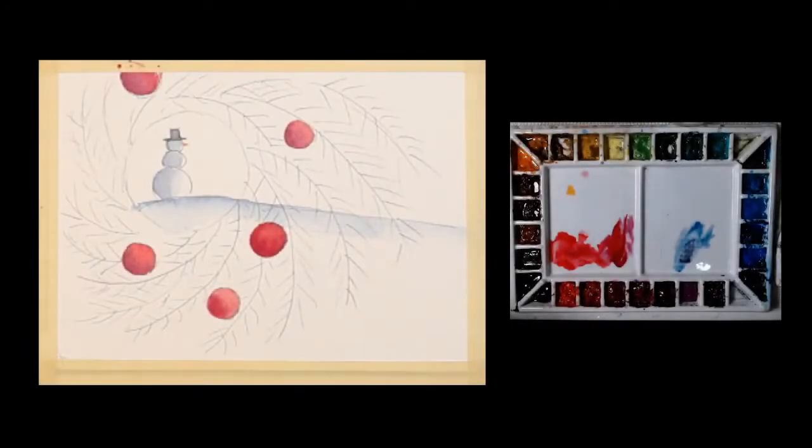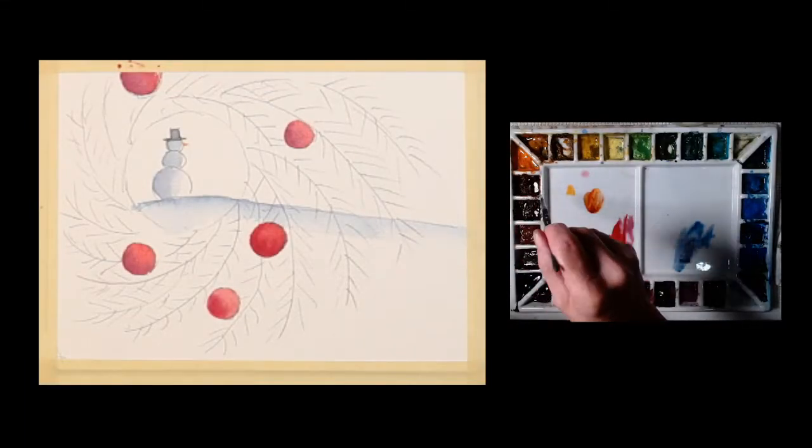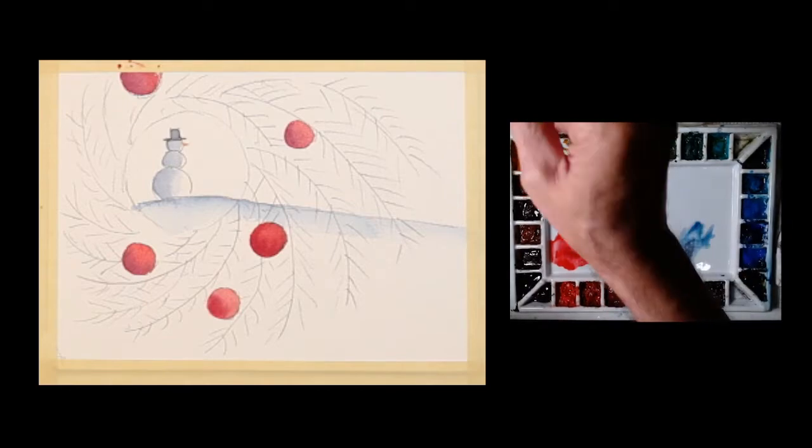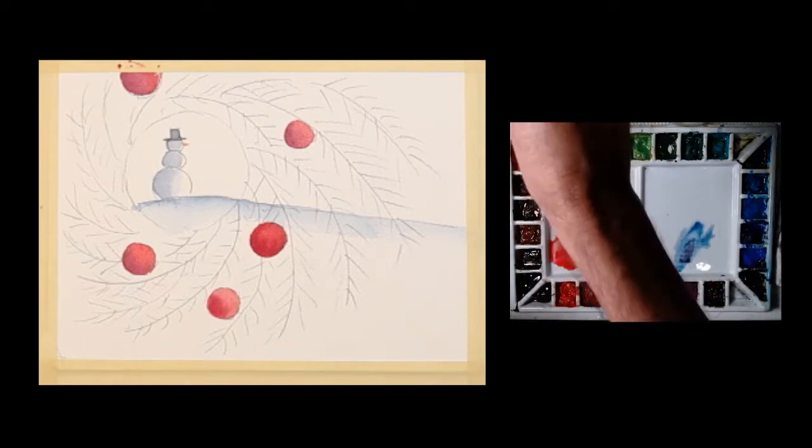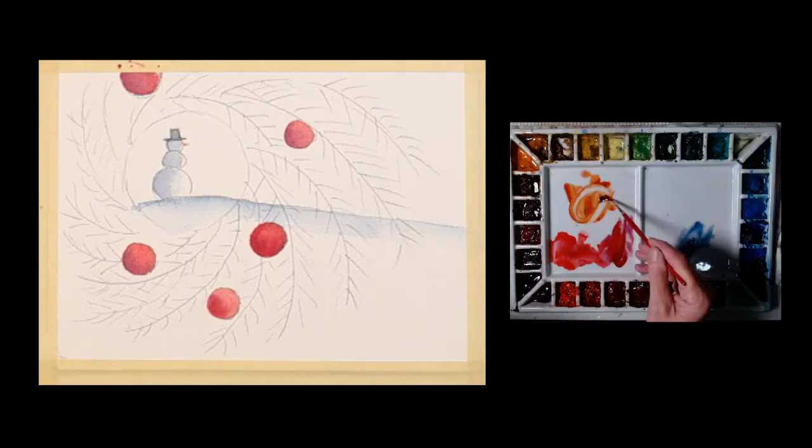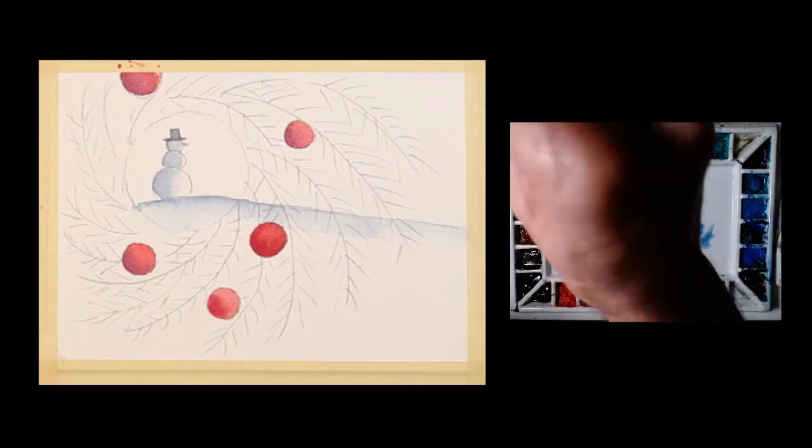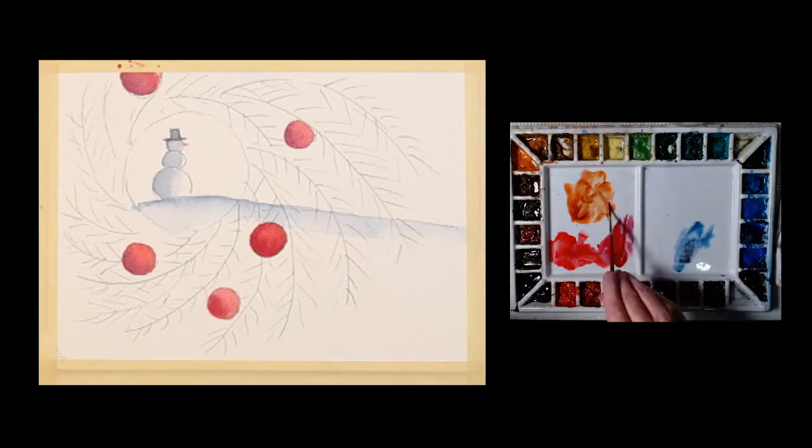That's dry. I'm going to take some burnt orange. You could use burnt sienna or you can mix something, and I'm adding some water to that for a fluid mixture. For this, I'm going to take a rigger brush. This happens to be a number six rigger brush. Make sure I have enough pigment in here.